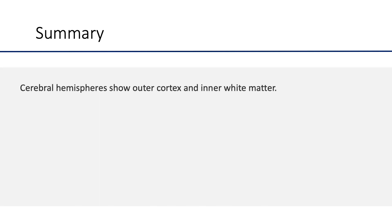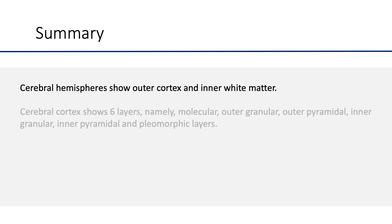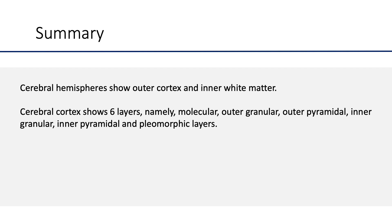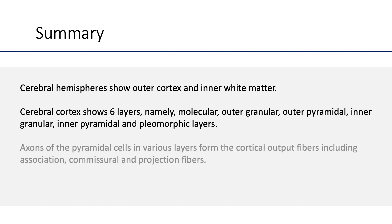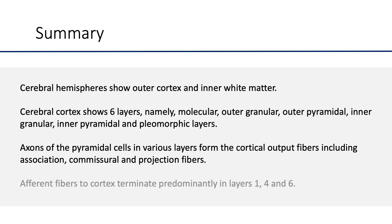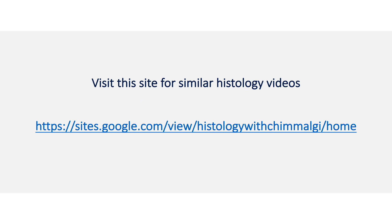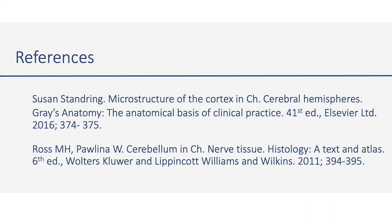To quickly recall what we have seen: cerebral hemispheres show outer cortex and inner white matter, with 6 layers in most places — molecular, outer granular, outer pyramidal, inner granular, inner pyramidal, and pleomorphic layers. Axons of the pyramidal cells in various layers form the cortical output fibers, including association, commissural, and projection fibers. Afferent fibers to the cortex terminate predominantly in layers 1, 4, and 6. Thank you, hope you enjoyed this video.